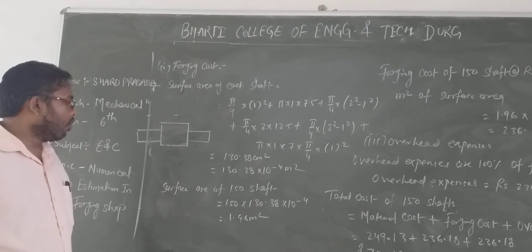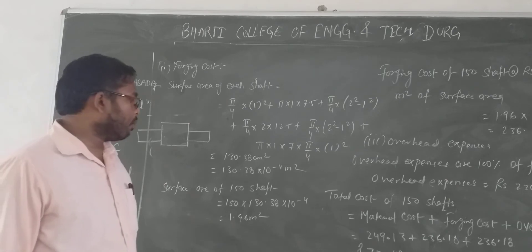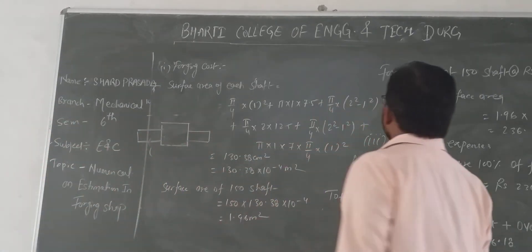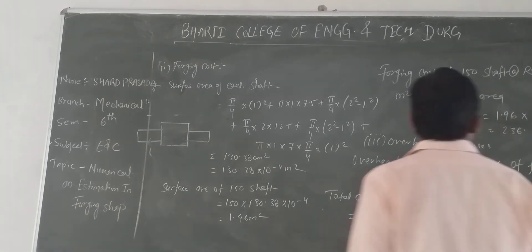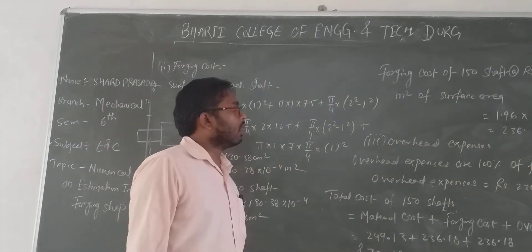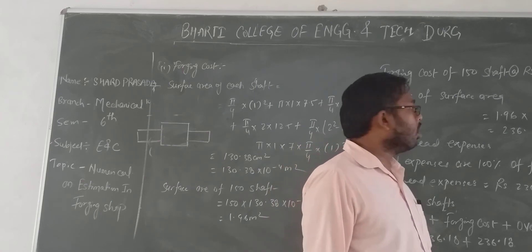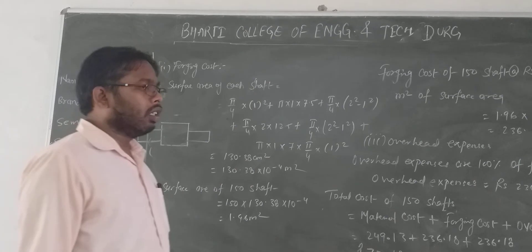Surface area of 150 shafts: 150 × 138 × 10⁻⁴ m² equals 1.96 m². The forging cost at 120.50 per meter square: 1.96 × 120.50 equals 236.18 rupees.